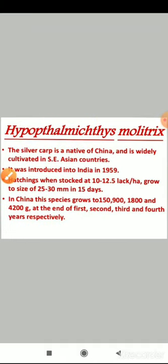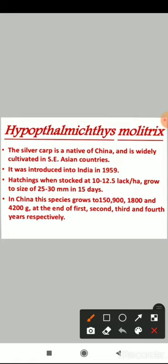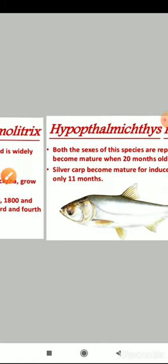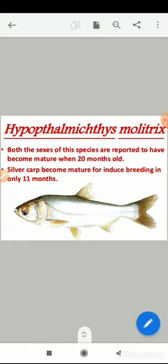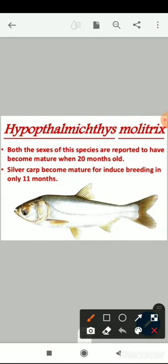Hypophthalmichthys molitrix, commonly called silver carp, is a native of China and is widely cultivated in South Asian countries. It was introduced into India in 1959. Hatchlings stocked at 10 to 12.5 lakhs per hectare grow to 25 to 30 millimeters in 15 days. In China, this species grows to 1,500, 1,800, and 4,200 grams at the end of the 1st, 2nd, 3rd, and 4th years respectively. Both sexes become mature when 20 months old. Silver carp becomes mature for induced breeding in 11 months.